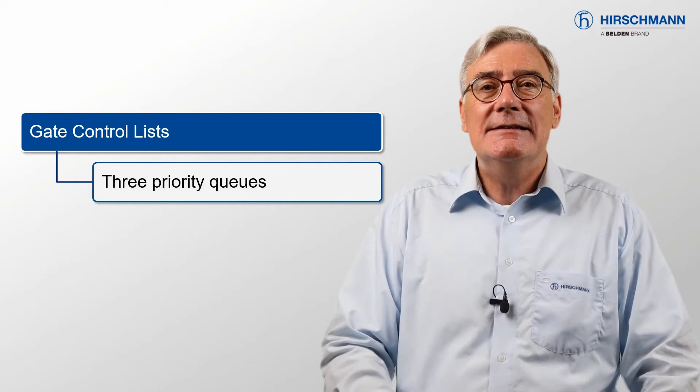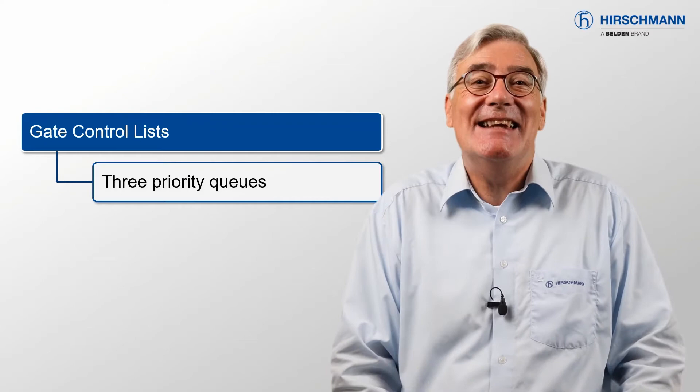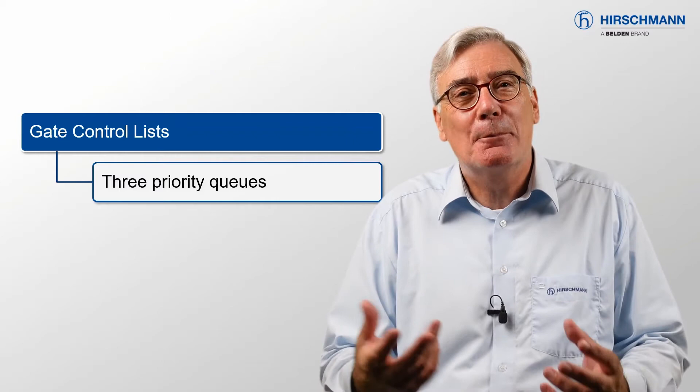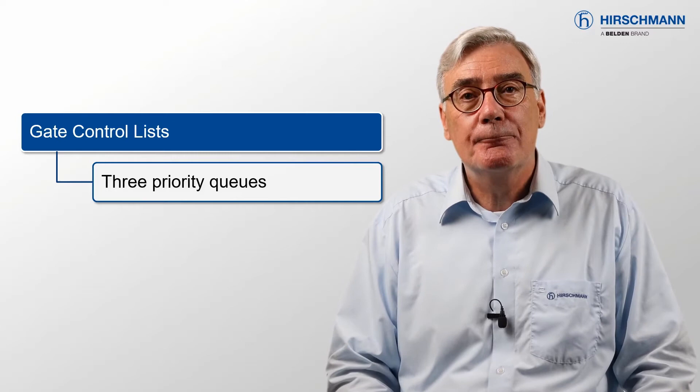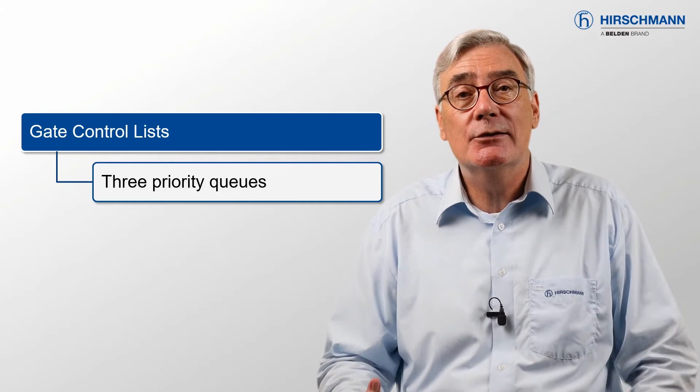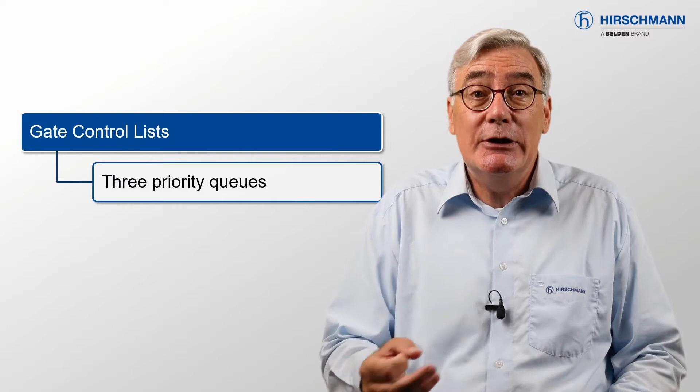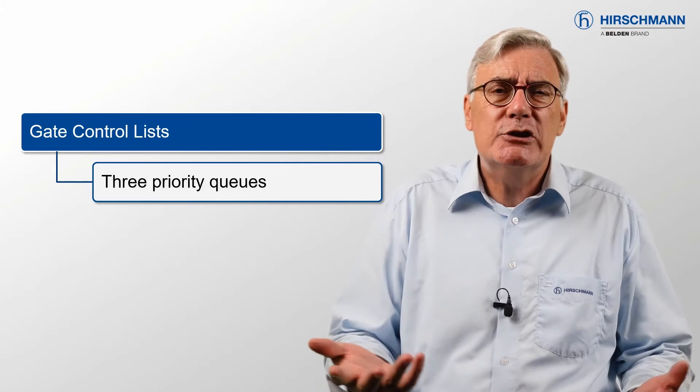The TSN standards define 8 priority queues — this is a lot. Only the biggest network would ever need 8 priority queues, so the Bobcat offers 3. This gives you 2 time slots for high priority queues, which you can assign to any applications, and still leaves 1 time slot for lower priority queues, which can be used for best effort traffic.